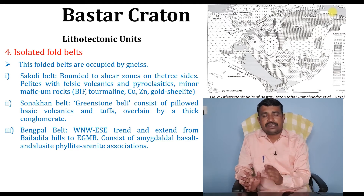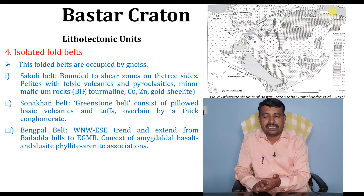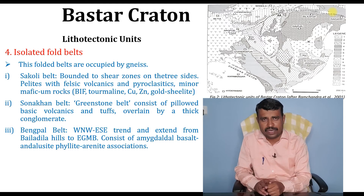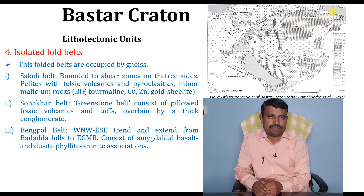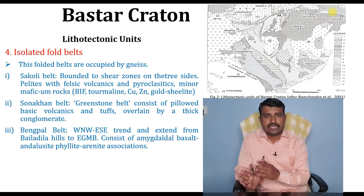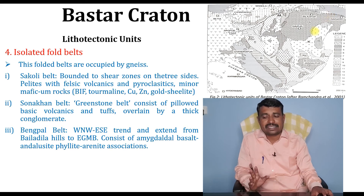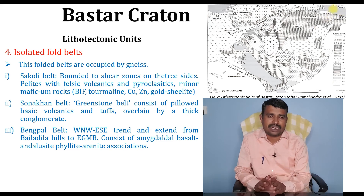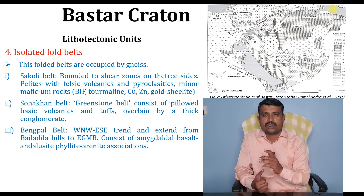The Sonakhan belt is also called a Greenstone belt. It consists of pillowed basic volcanics and tuffs and is overlain by thick conglomerate. The Bengpal belt trends west-northwest to east-southeast, extending from the Baladila Hills to the Eastern Ghats mobile belt, and consists of amygdaloidal basalt and phyllite-ironite associations.